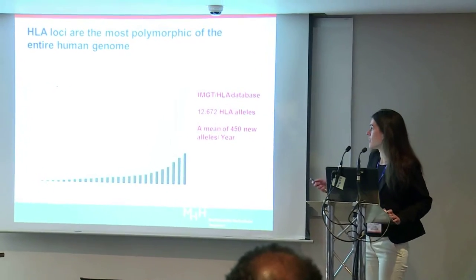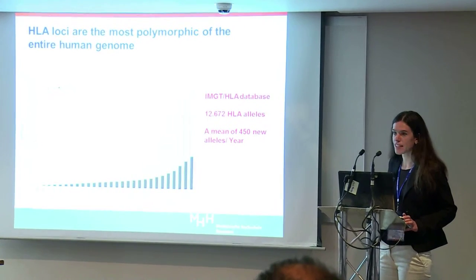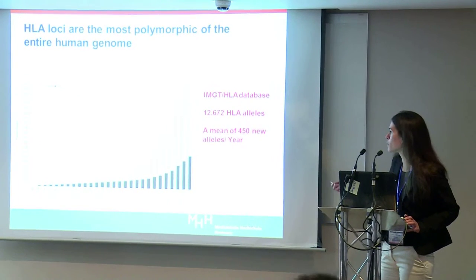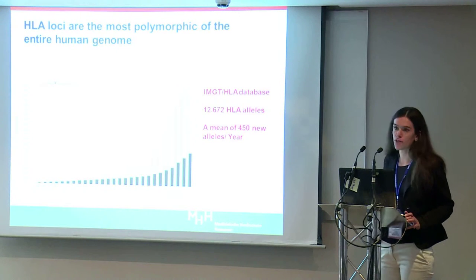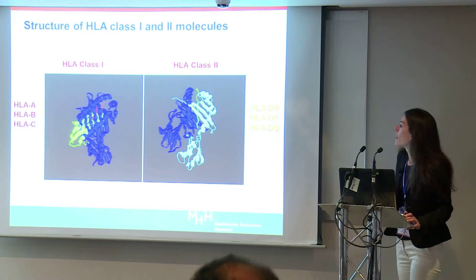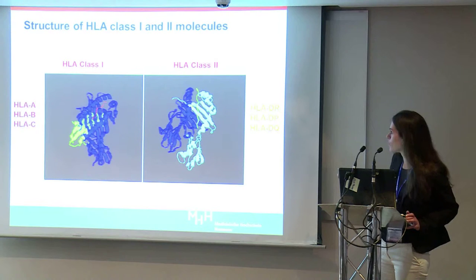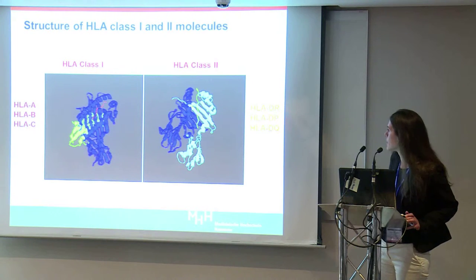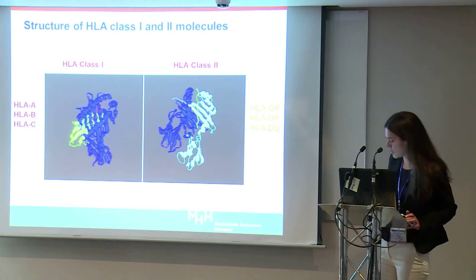The human leukocyte antigen are the most polymorphic genes of the entire human genome. There are more than 12,000 HLA alleles described and there is a mean of 450 new alleles every year. According to their structural differences, there are two main classical HLA classes: class 1 and class 2 molecules, comprising HLA A, B and C, and HLA DR, DP and DQ — these are the most important loci for transplantation.